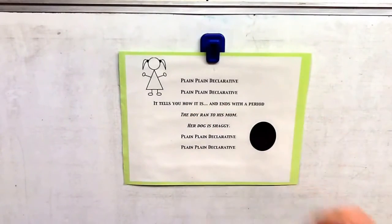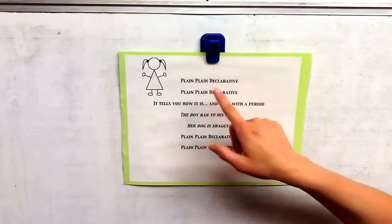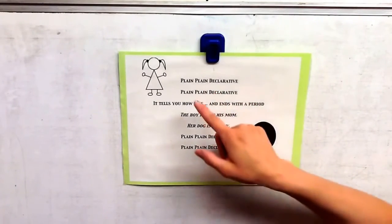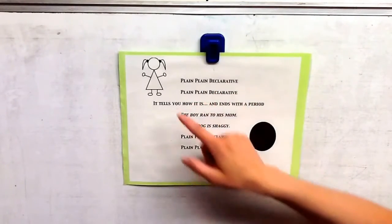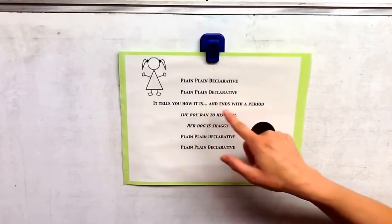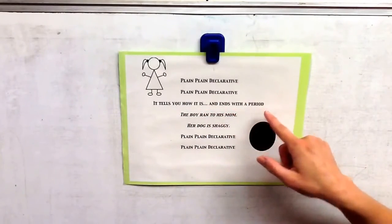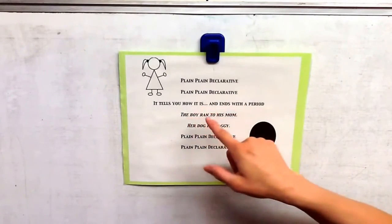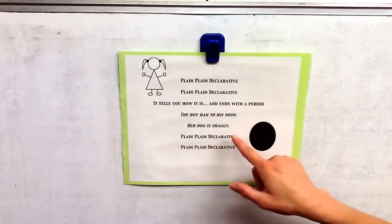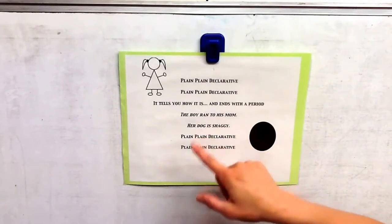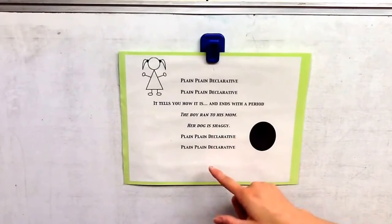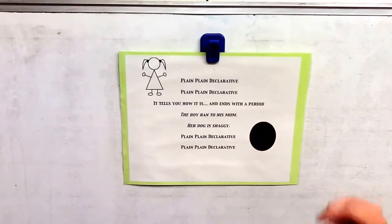Now, I'm going to sing it. Plain, plain declarative. Plain, plain declarative. It tells you how it is and ends with a period. The boy ran to his mom. Her dog is shaggy. Plain, plain declarative. Plain, plain declarative.